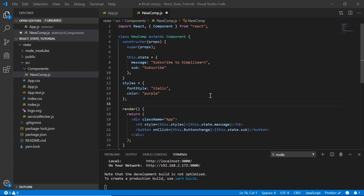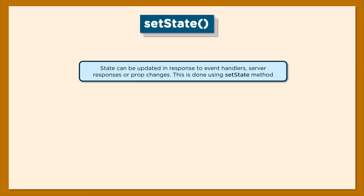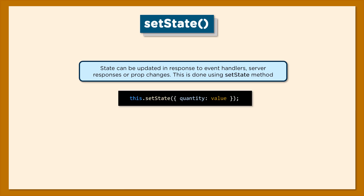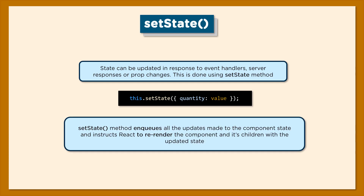We add an onClick event handler to the button that calls a method called buttonChange. This method will update the state using setState. The setState method can be triggered in response to event handlers, server responses, or prop changes. It enqueues all updates to the component state and instructs React to re-render the component and its children with the updated state.